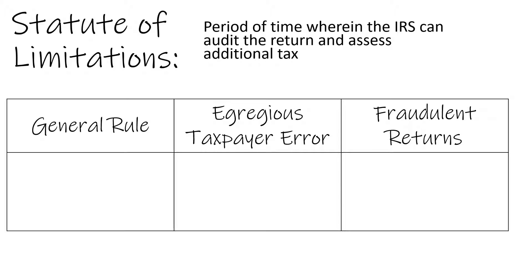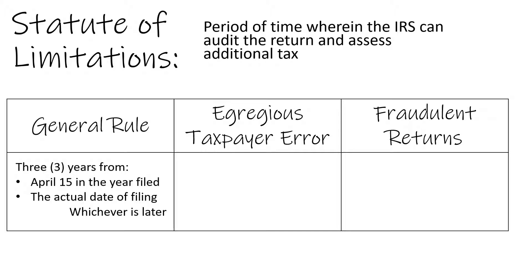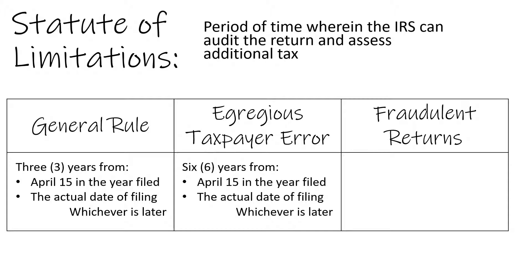Once the IRS has accepted your return, it doesn't necessarily mean that you're free from audit or free from error. Generally, the IRS has three years in which to audit your return and assess additional tax. If the IRS detects an egregious taxpayer error, they have six years from April 15th of the year in which the income tax return was filed, or six years from the actual date of filing, whichever is later.